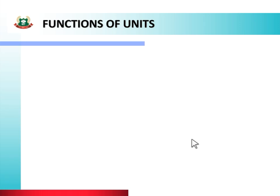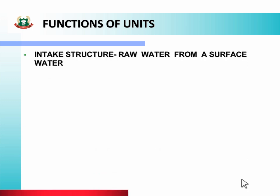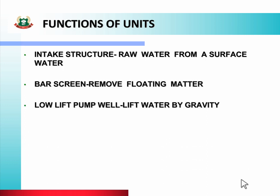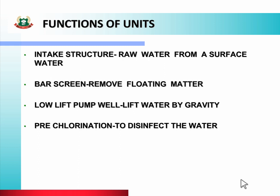Here I will explain the functions of each unit of the water supply scheme. Intake structure: raw water is drawn from a surface water source to remove floating matter. Low lift pump well: these pumps lift the water to flow through the treatment process by gravity — water is sent to the treatment unit via pump. Pre-chlorination: to disinfect the water.